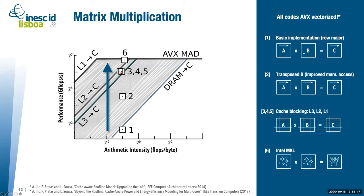To overcome these issues, we applied very typical strategies in matrix multiplication optimization: we transposed matrix B and improved our access patterns, which means better L3 utilization. As we can see in the roofline, our point two is now positioned between L3 and DRAM.